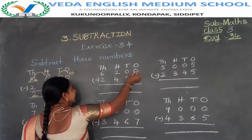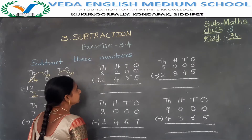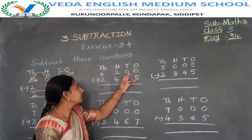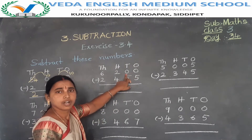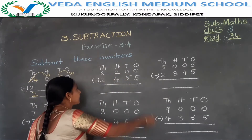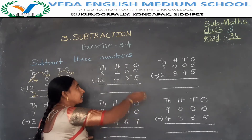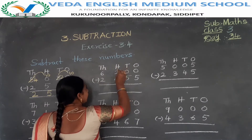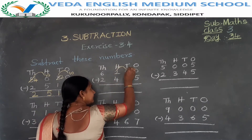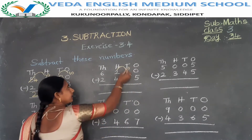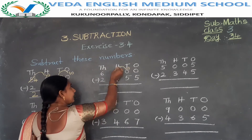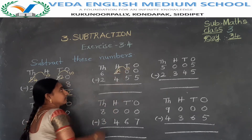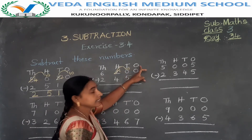0 minus 5 is not possible. Now take a borrow from the 10th place. But the 10th place is also 0 — how to take a borrow? So first take a borrow from the 100th place to the 10th place, then from the 10th place to the 1st place. The 100th place: 200 — 100 has gone to the 10th place, so 2 becomes 1.